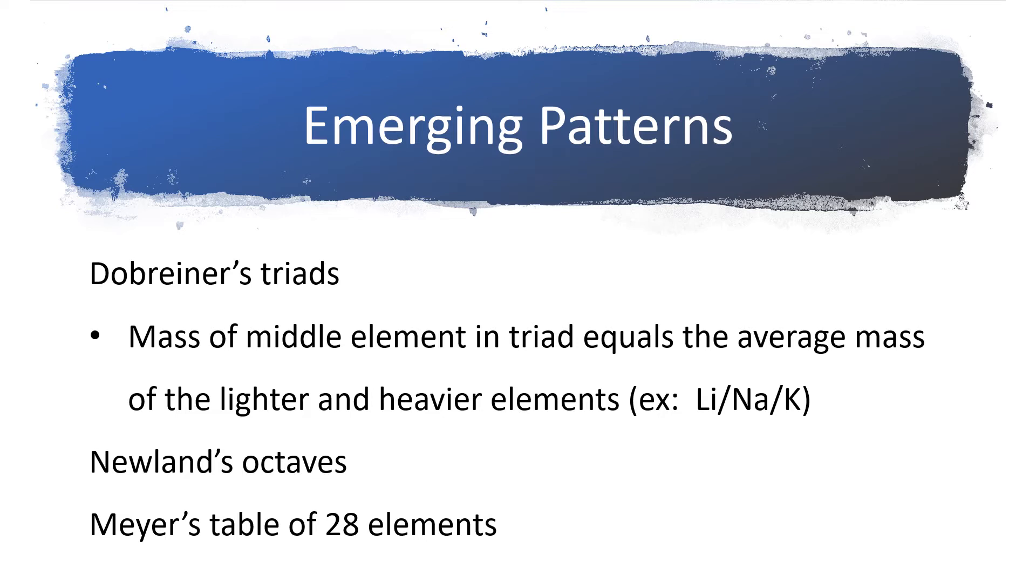Some of the more successful arrangements included things like Dobreiner's triads. He was able to take clusters of three elements and put them together in some way that had some meaning. When he picked his three elements, the element that came in the middle had a mass that was close to the average of the mass of the other two elements.